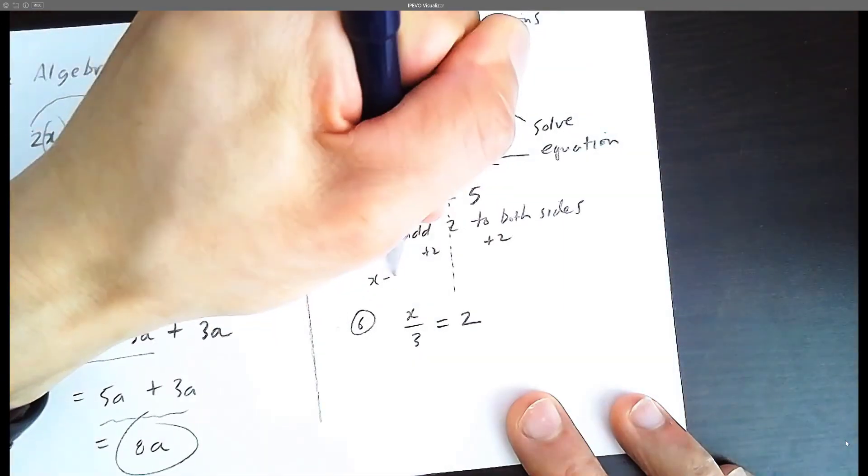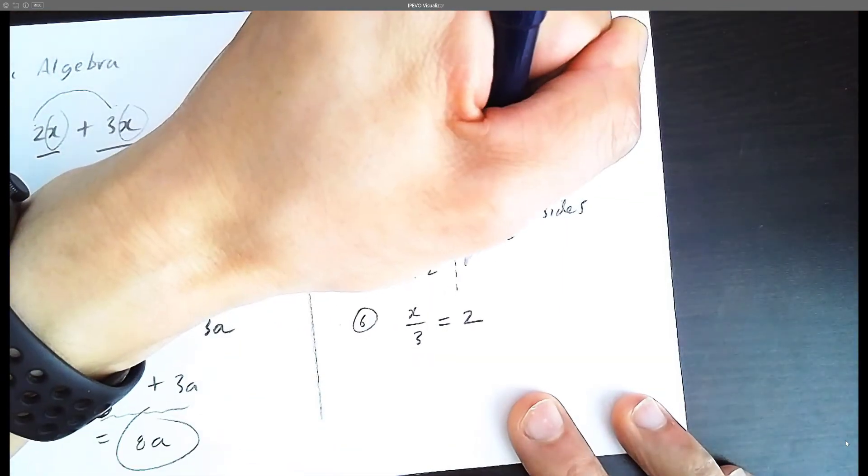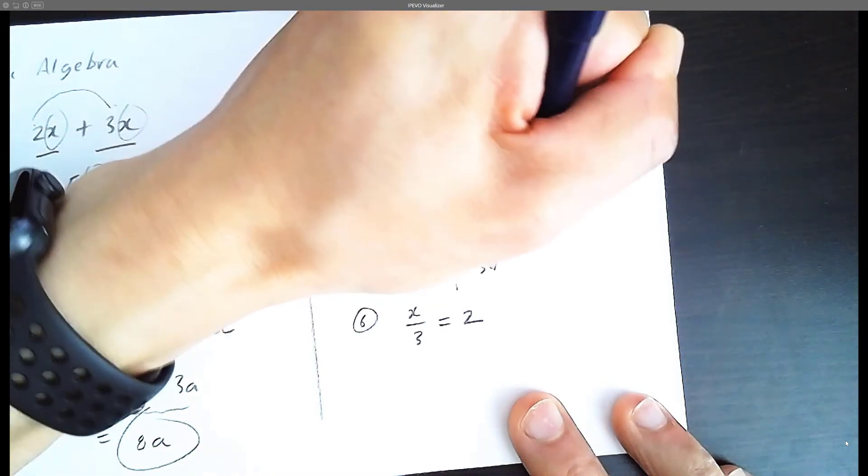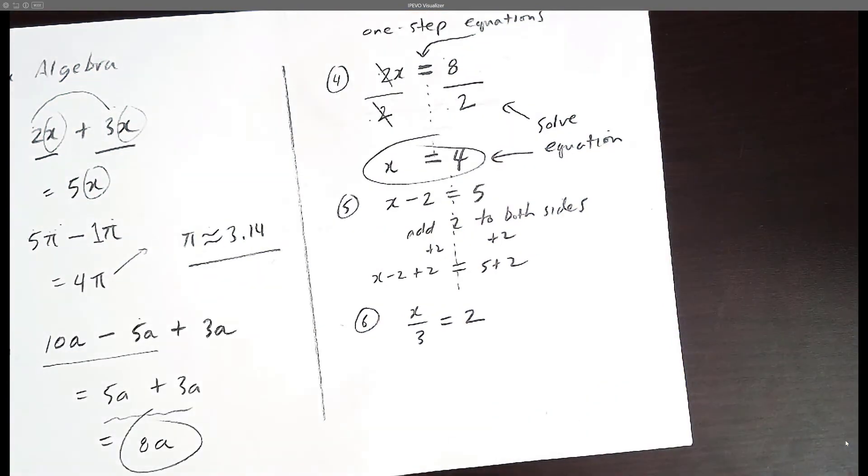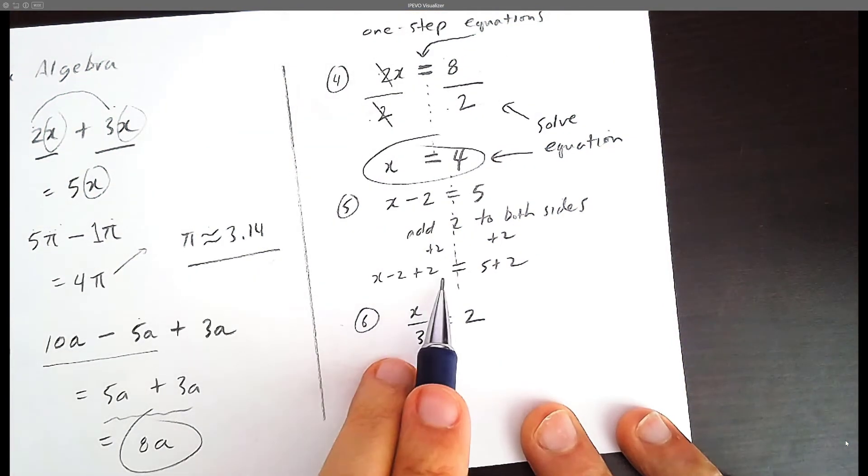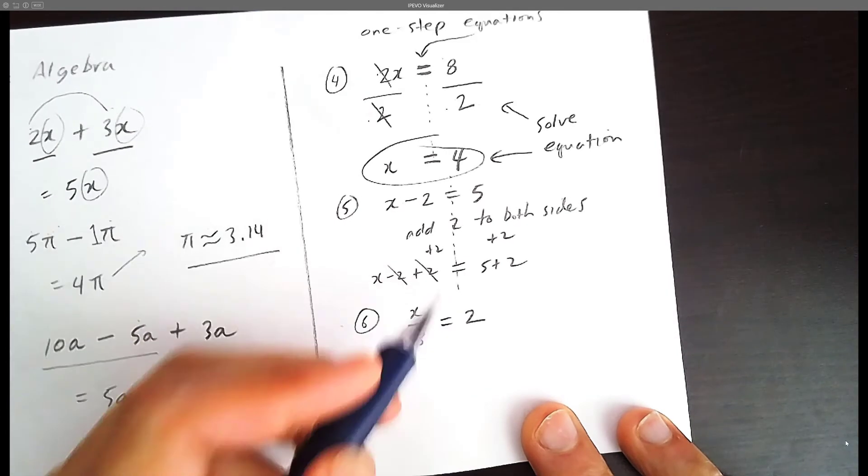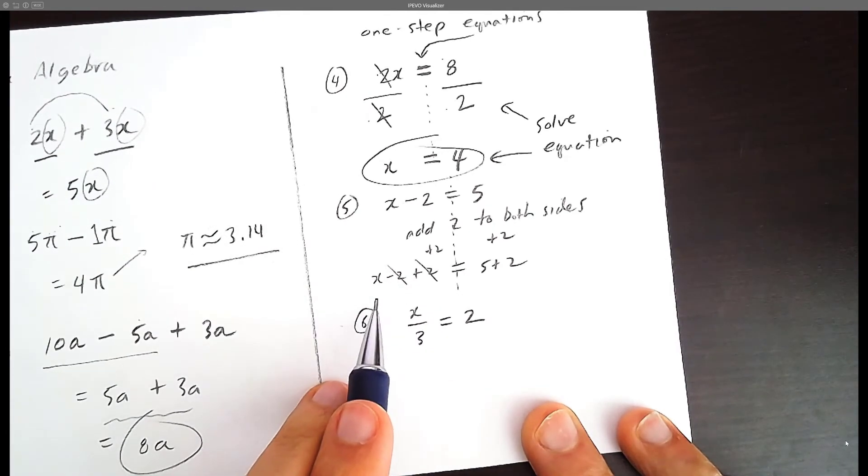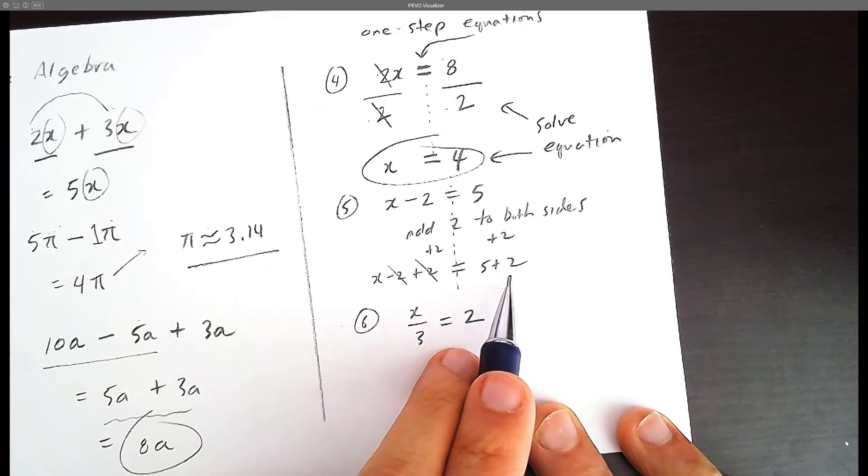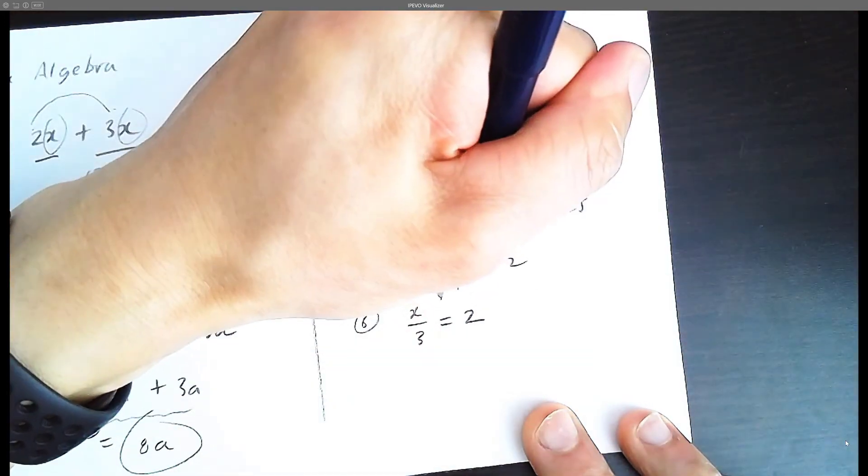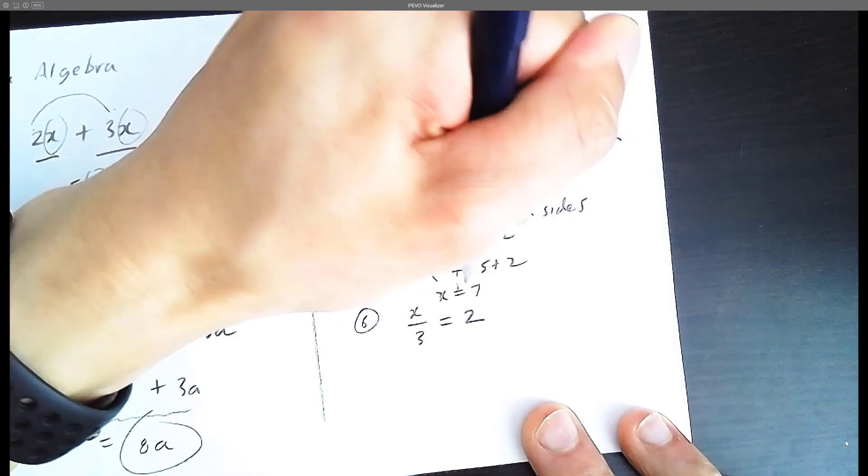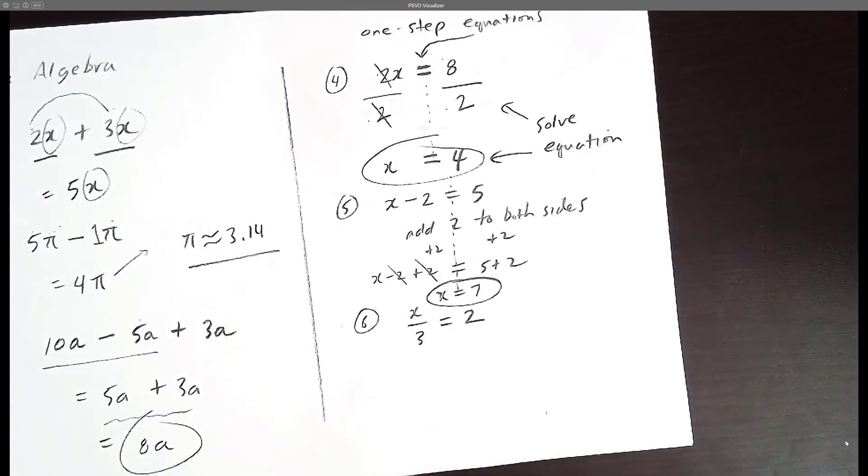So what is x minus two plus two? And on the right, we have equals five plus two. The minus two and the positive two—they cancel. So x is all by itself on the left, and that's the goal. The goal is to get x all by itself. And what's five plus two? The answer is seven. So x is equal to 7. And that's our solution. We solved it. We solved this equation.